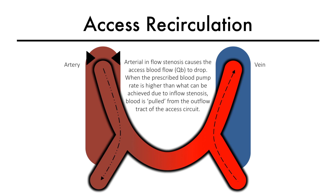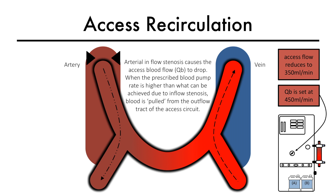Arterial inflow stenosis causes the access blood flow to drop. When the prescribed blood pump rate is higher than what can be achieved due to access inflow stenosis, the excessive negative pressure created by the blood pump within the access pulls blood from the outflow tract of the access circuit, resulting yet again in mixing of dialyzed and undialyzed blood.